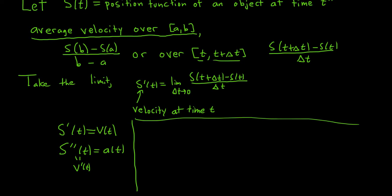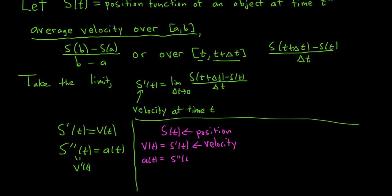Let's recap everything in one place. We have s(t), the position function. v(t) is the velocity function, equal to s'(t). And a(t) is the acceleration, equal to s''(t).